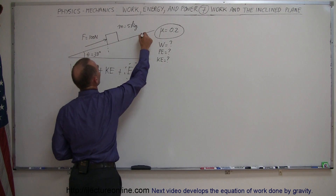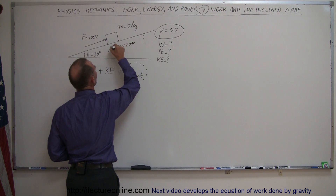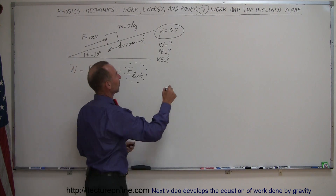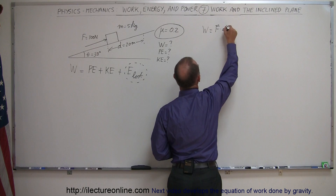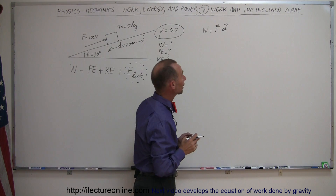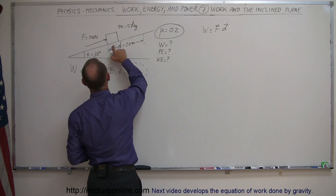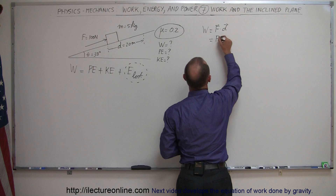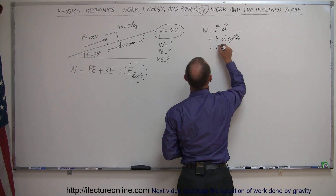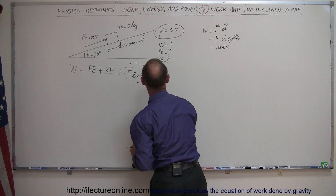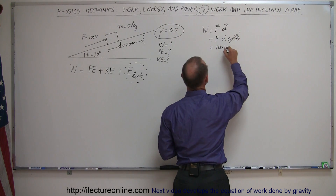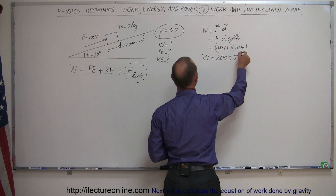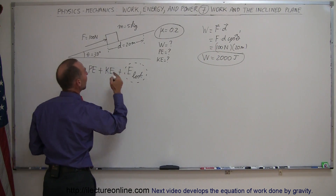The object moves a displacement of 20 meters. Work is equal to force dot displacement — vector quantities using a dot product. Since the force and displacement are in the same direction, the angle between them is zero, so W = F × D × cos(0°) = F × D. With 100 newtons of force times 20 meters, that gives us 2,000 joules of work done, which subdivides into potential energy, kinetic energy, and energy lost.